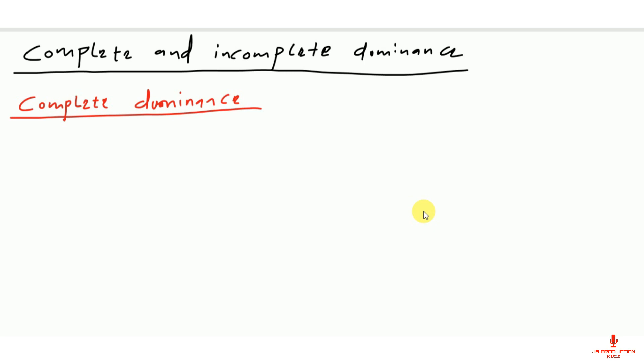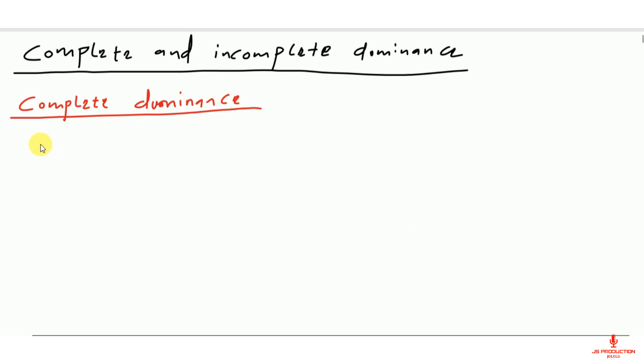In our last presentation we actually looked at the Mendel experiment. Mendel actually used two plants — a tall plant and a dwarf plant.